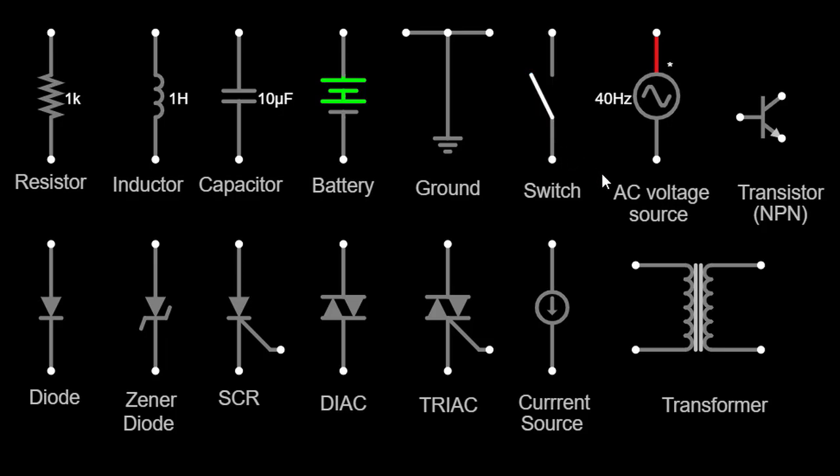When dealing with alternating current AC circuits, we use an AC voltage source symbol. It represents a source that generates alternating current. The symbol usually consists of a circle with a wavy line inside, indicating the sinusoidal nature of AC voltage.